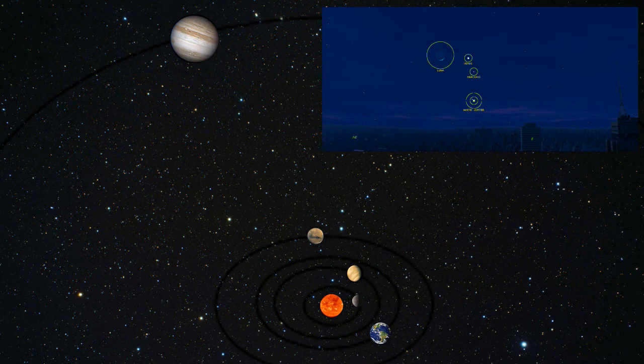Hasta agruparse en un espacio de tan sólo seis grados celestes. Los astrónomos llaman a este fenómeno conjunción planetaria.